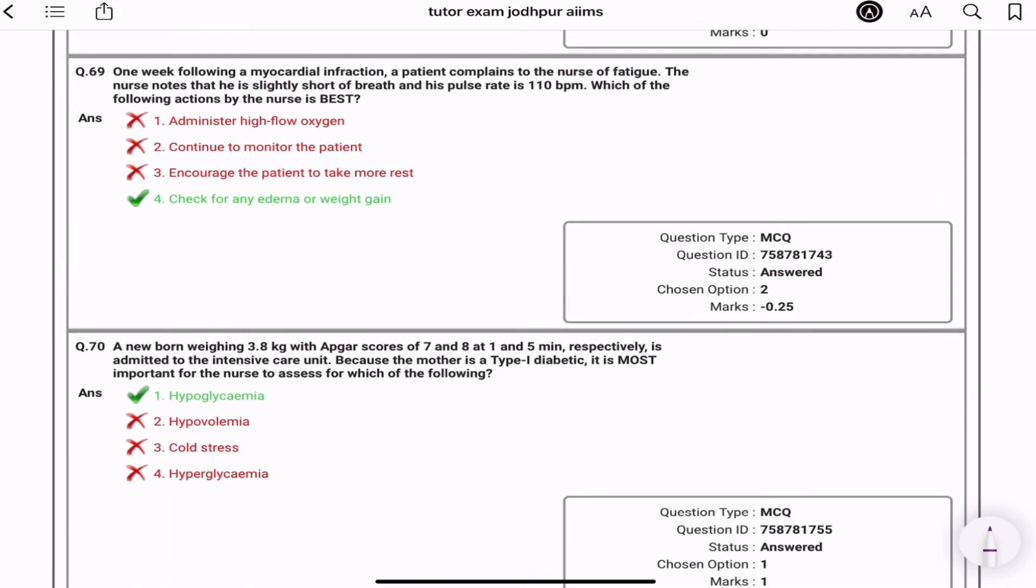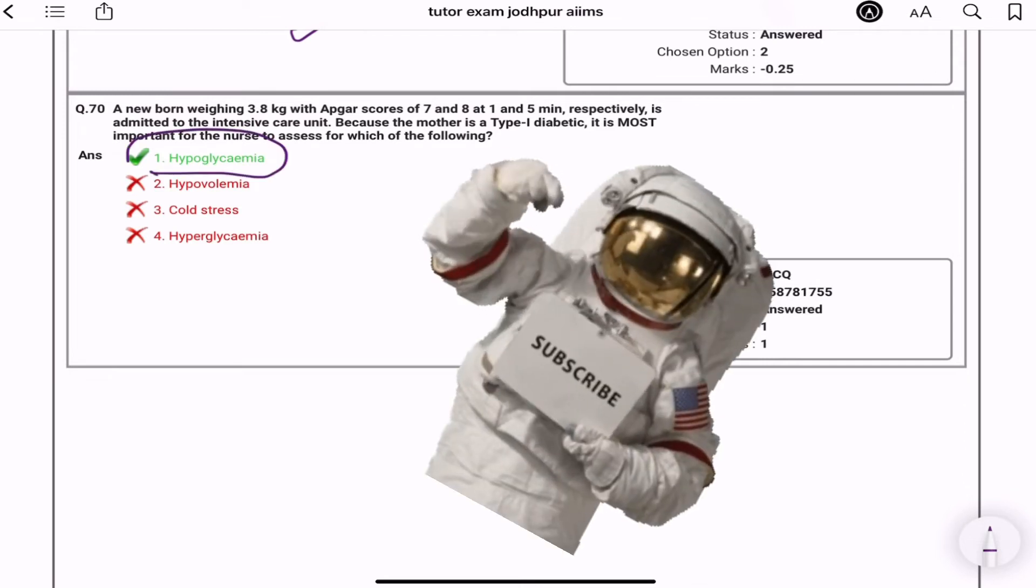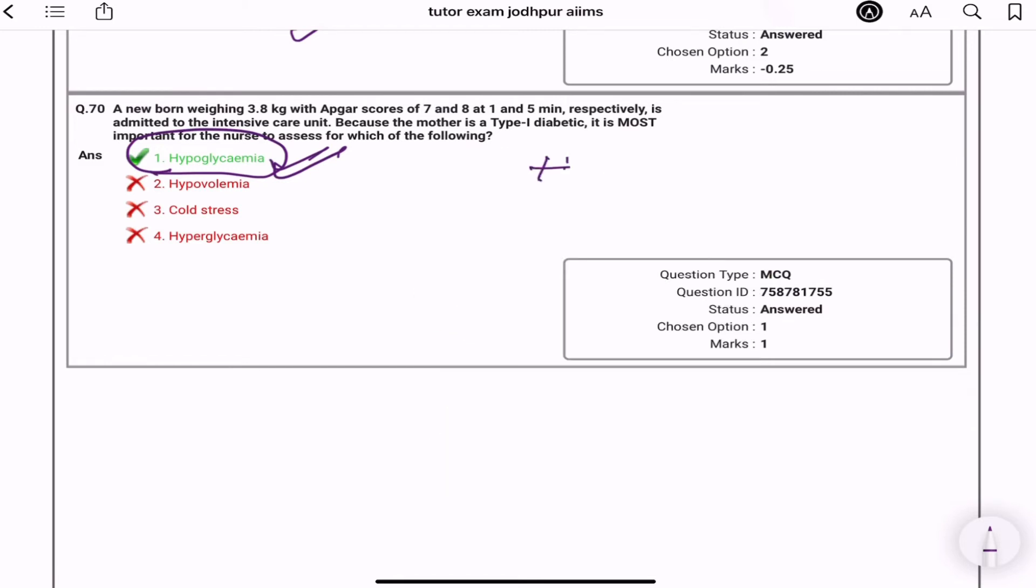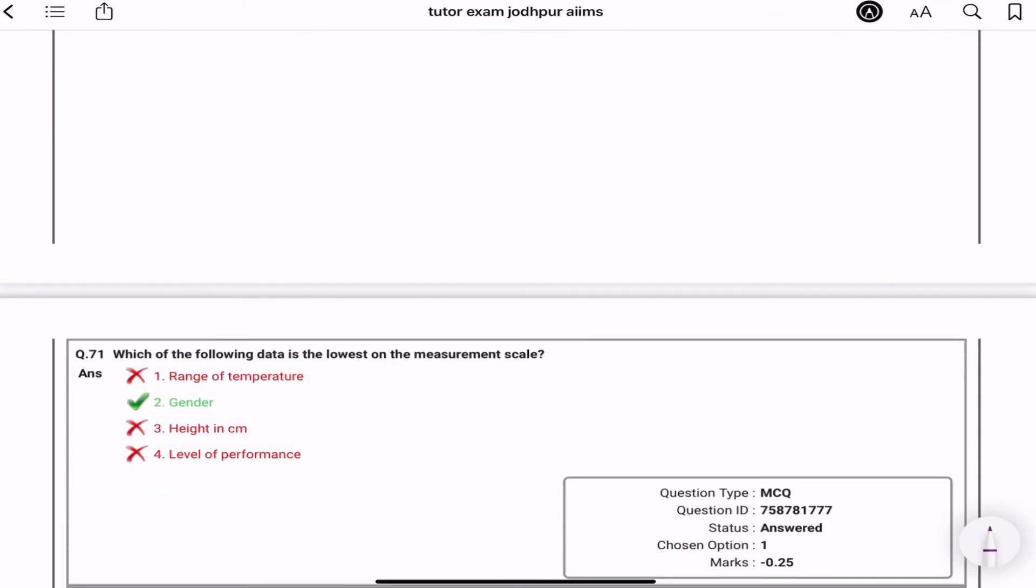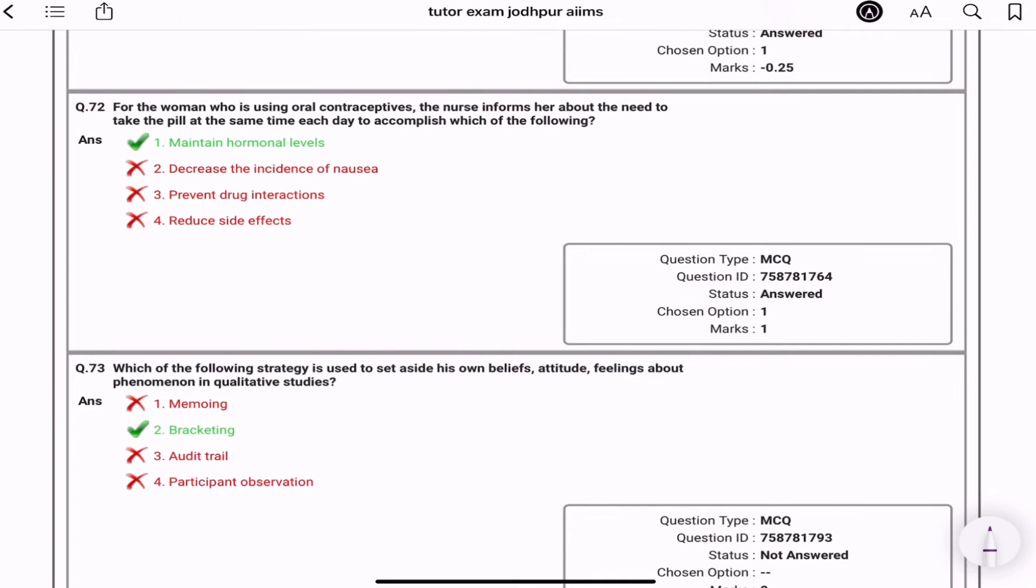One week following of the MI, a patient complains to the nurse of fatigue. The nurse knows the patient is slightly short of breath, his pulse is 110. Which of the following action by the nurse is appropriate? Check for any edema or weight gain. A newborn weighing 3.8 with Apgar 7 and 8 at 1 and 5 minutes respectively is admitted to the intensive care unit because of the mother's type 1 diabetic. It is most important for a nurse to assess for which of the following? Baby ko kis ke liye assess karoge? Hypoglycemia. If there is a GDM mother, then there are two questions you will ask. One is baby is hypoglycemic, the second is macrosomia baby - baby ko weight is more than normal.